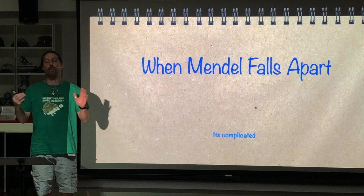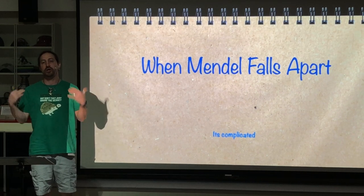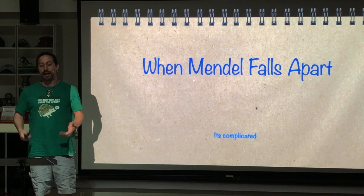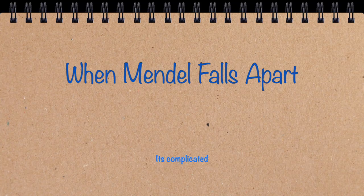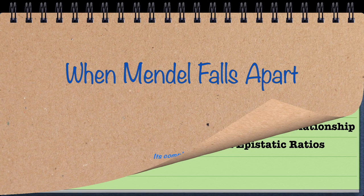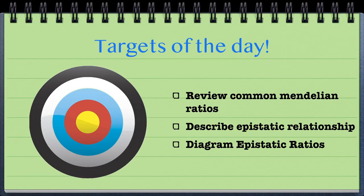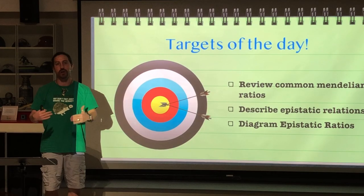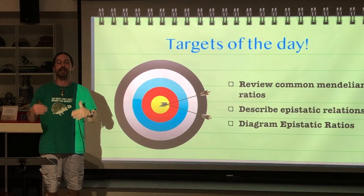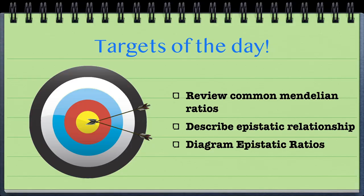Today, we're going to be looking at when Mendelian genetics doesn't exactly work out — something we call epistasis. We're going to look at when the ratios don't exactly mimic the ratios that we're used to. We'll review the common Mendelian ratios, look at epistatic relationships and how they affect those ratios, and then diagram epistatic ratios.